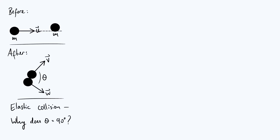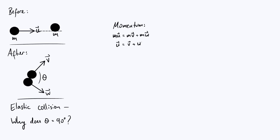The proof of this result is actually quite nice because it only really involves two equations coming from the conservation of momentum and the conservation of energy. The conservation of momentum straightforwardly implies that mu = mv + mw. Here's where we use the fact that the particles have identical masses — we just cancel the m's from both sides and we find that the u vector is just the sum of v and w.